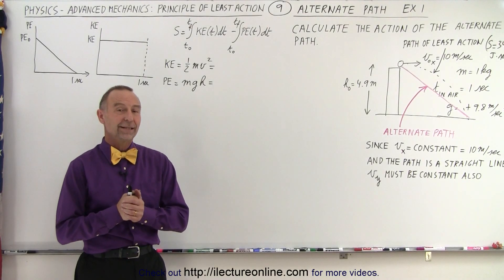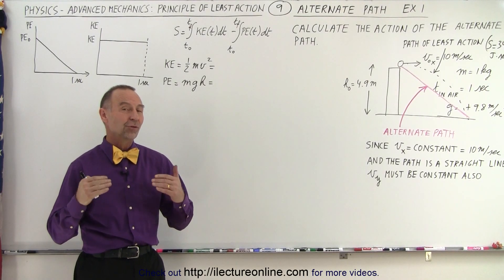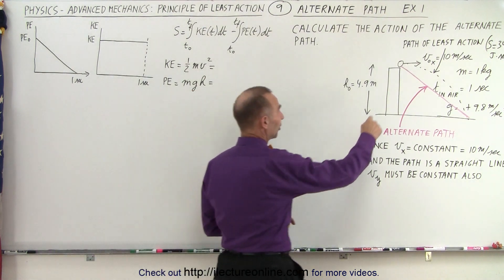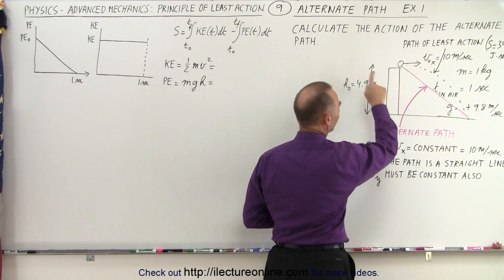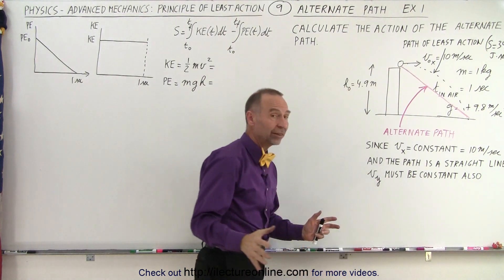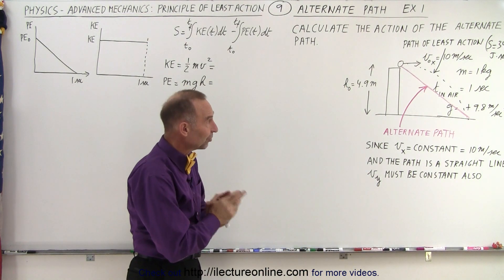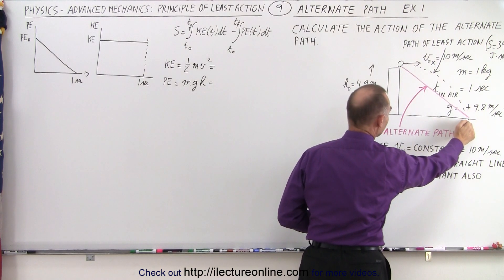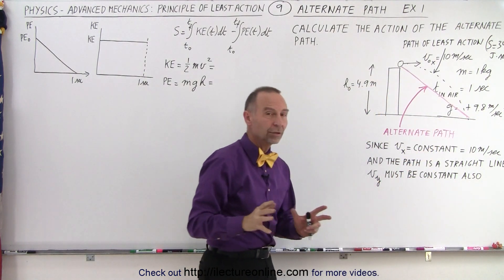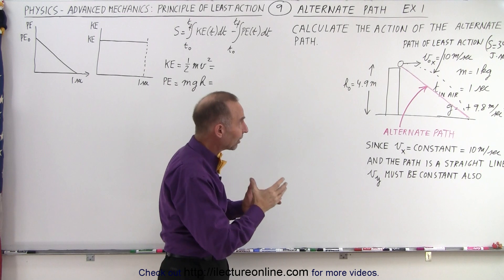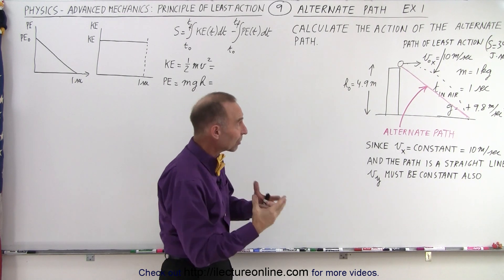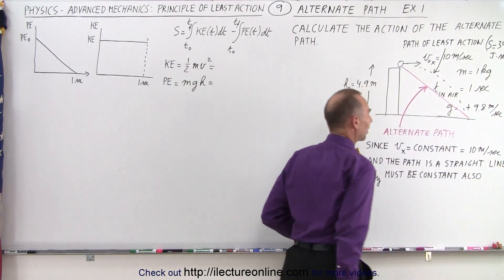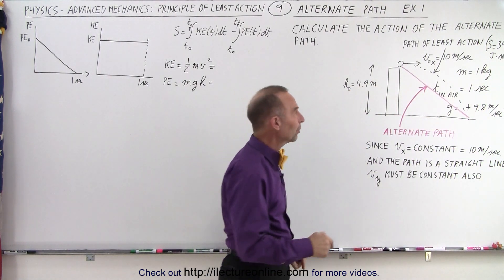Welcome to our lecture online. Now we're going to try an alternate path. Remember in the previous video, we took a projectile from a height of 4.9 meters, threw it sideways horizontally at a velocity of 10 meters per second, and the projectile landed 10 meters away one second later. When we calculated the action, or the path of least action, we found it to be 34 joules times seconds.